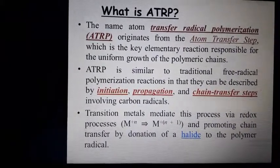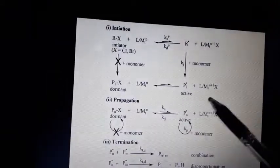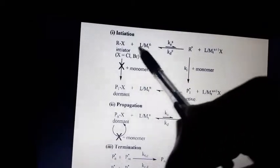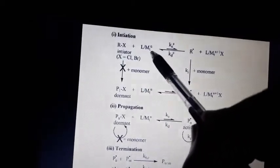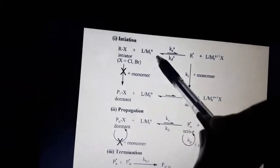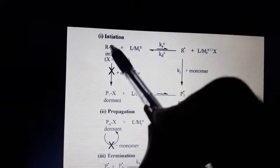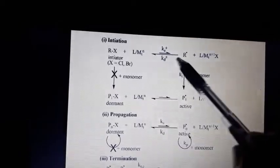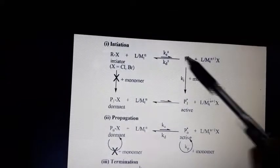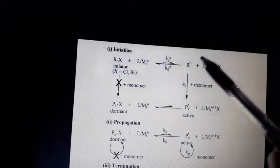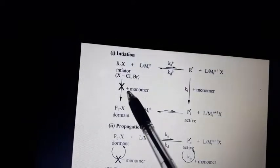In ATRP, transition metals mediate the process by a redox process. The general mechanism involves an initiator alkyl halide and a catalyst in a lower oxidation state complex. We can add a monomer to this initiator once a free radical is generated. The catalyst in the active state is converted to the complex in the inactive state.